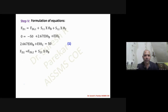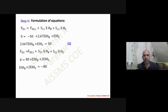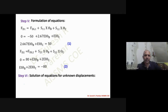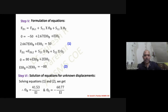The second equation is obtained similarly: EI·θB + 2EI·θC = minus 80. Solving both equations gives θB = 41.53/EI and θC = minus 60.77/EI.